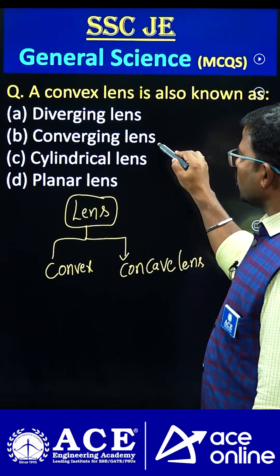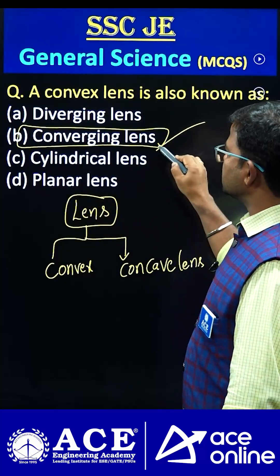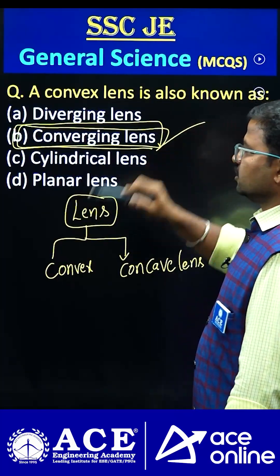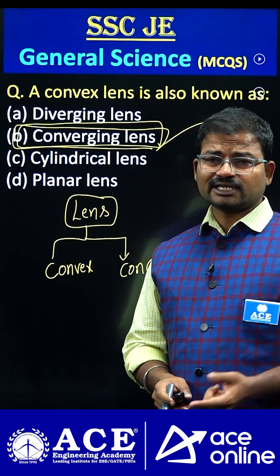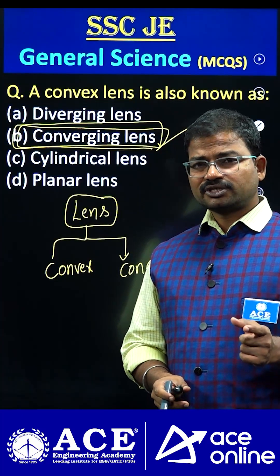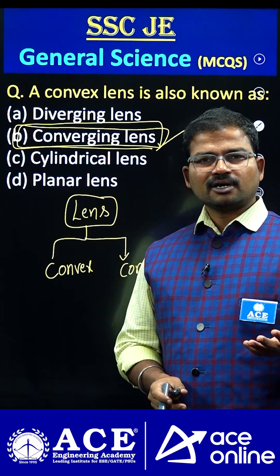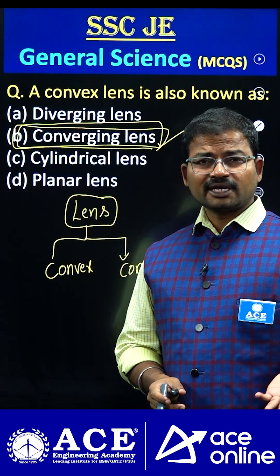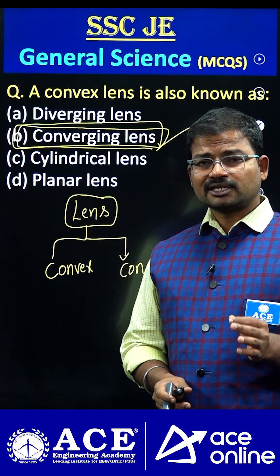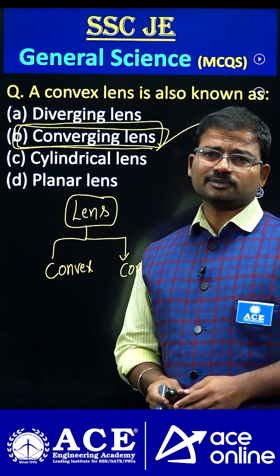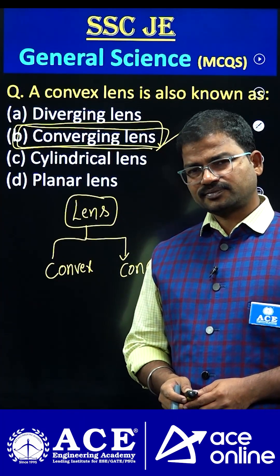So, here the correct answer is mostly option B only — converging lens. When would we mostly use a converging lens? Generally, if you observe defects of vision, we are mainly facing myopia and hypermetropia. So, what kind of lenses are mainly being used in these two types of vision defects? If you know the answer, please comment. Thank you.